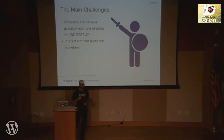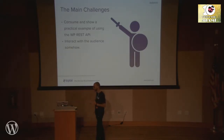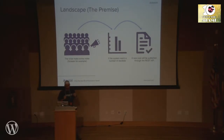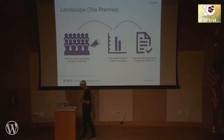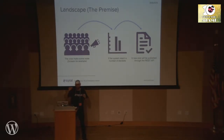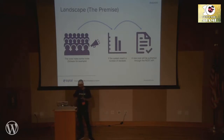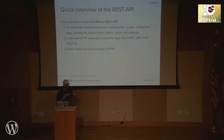I want to use this with a physical device and interact with the audience today. The main idea is to ask you to scream as loud as you can. This camera will capture the decibels, and if we reach a certain number, the Raspberry Pi will publish a post on my website with some information and pictures taken by the webcam. Let's see if this will work — I tested it and it works.